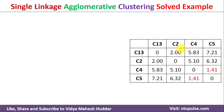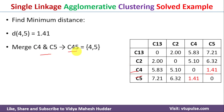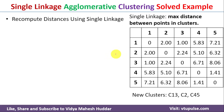After updating the table, we find the next minimum distance, which is 1.41 between clusters C4 and C5. We merge C4 and C5 to form new cluster C45. The updated clusters are now C13, C2, and C45.